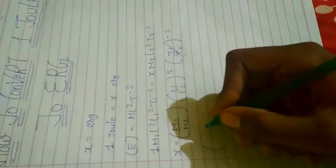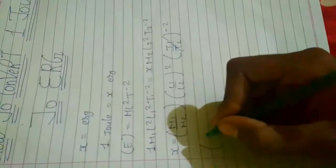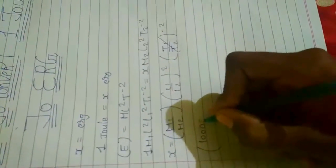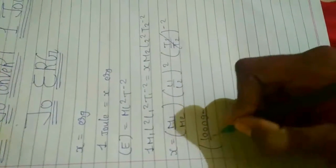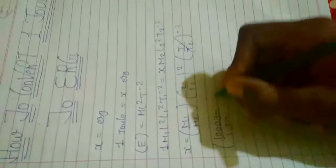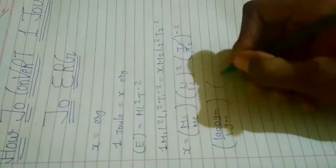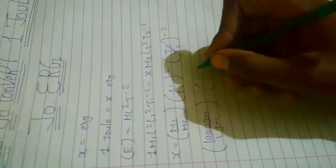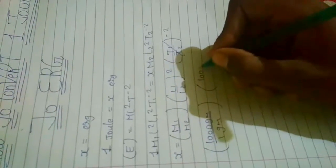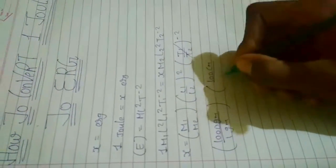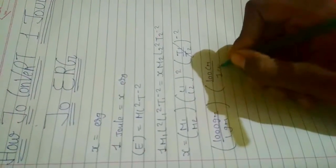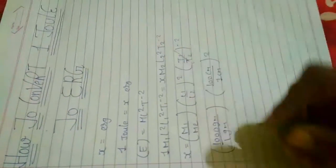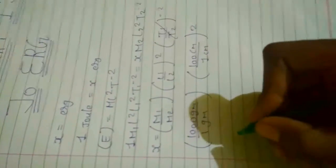So the value will be in grams, it will be thousand grams upon one gram. Then it's in length, so it will be in centimeters, so hundred centimeters upon one centimeter whole squared. So after this by solving this we get...